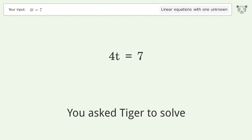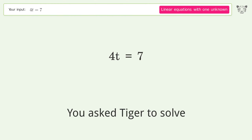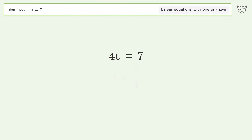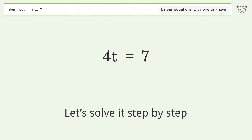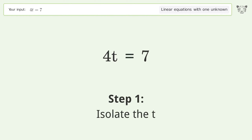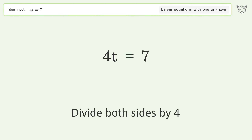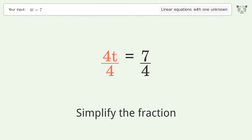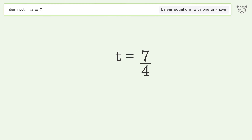Tiger solves this linear equation with one unknown step by step. To isolate t, divide both sides by 4 and simplify the fraction. The final result is t equals 7 over 4.